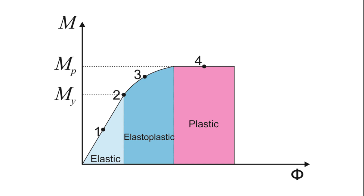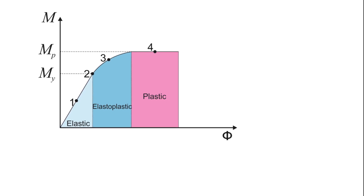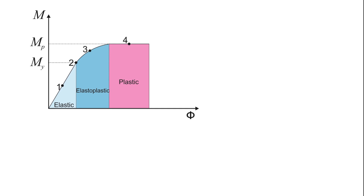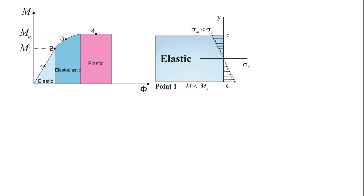My is the yield moment, which is the moment that corresponds to the first yield of the cross-section. It is also called the maximum elastic moment. Mp is the plastic moment, that is the moment that corresponds to the fully plastification of the cross-section. Points 1 and 2 are located in the elastic region, meaning that stress varies linearly with the y distance. At point 1, the normal stress sigma_x does not exceed the yield strength sigma_y. Therefore, Hooke's Law applies and the maximum stress sigma_m can be determined using the flexural formula.